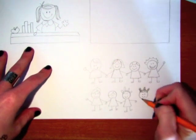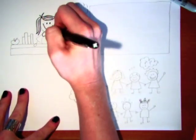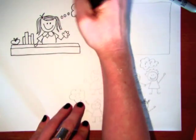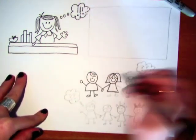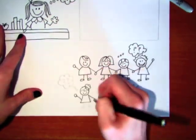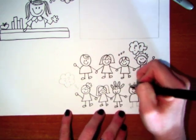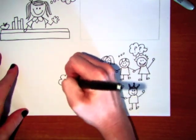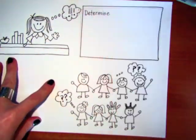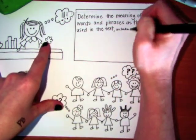This is actually a ninth grade standard, but let's see how my eighth graders do. Determine the meaning of words and phrases as they are used in the text, including figurative and connotative meanings. Analyze the cumulative impact on specific word choices on meaning and tone. Do you understand what any of that means? Determine the meaning of words and phrases. I wanted my eighth graders to read this standard so you can see how complicated the language is for a student to understand.